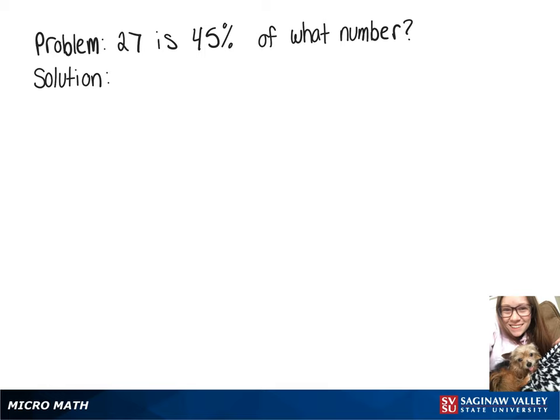We want to figure out what number 27 is 45% of. So we have 27 — when we see the word 'is', that means we're going to put an equal sign. Then 45% will turn into a decimal, which is 0.45. 'Of' means multiplication, and 'what number' — we're going to put an x there.